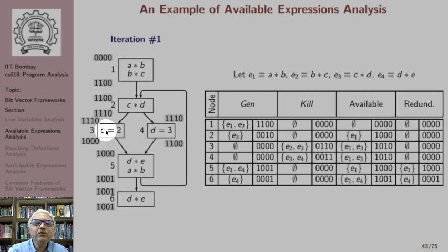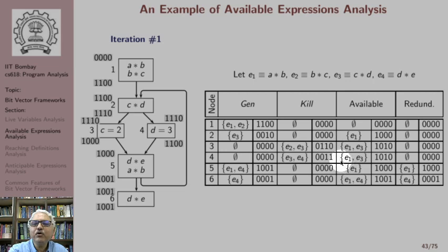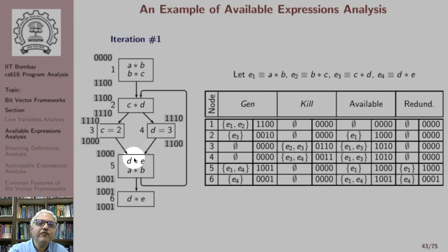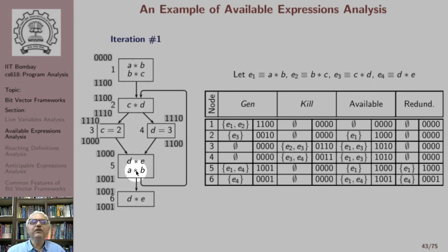In node 3, e2 and e3 are killed so bits 2 and 3 become 0, leaving only bit 1 as 1. In block 4, expressions e3 and e4 are computed, so bit e3 becomes 1 — the out of node 3 is 1 0 0 0 and out of node 4 is 1 1 0 0. We compute the IN of node 5 as the intersection of these two values, giving 1 0 0 0, which means only expression a*b is available at the entry of node 5.